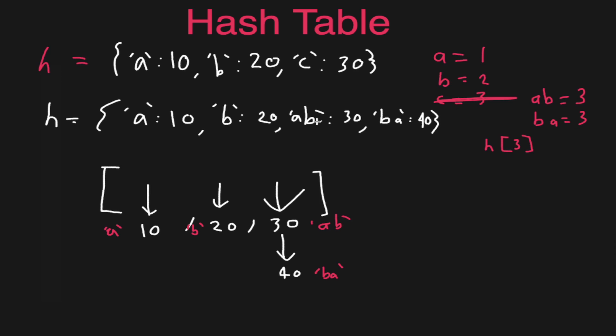So using a linked list is a way to get rid of the collision problem. Basically, if you want to look up an element here, let's say we want to look up the element 'ab', or let's say we want to look at the element 'ba'.